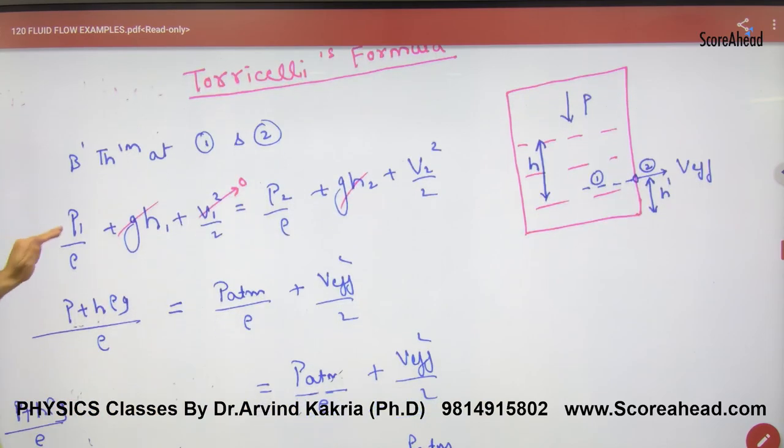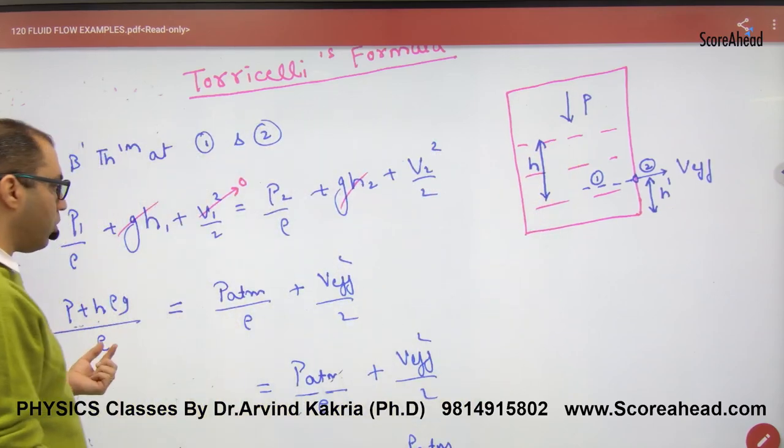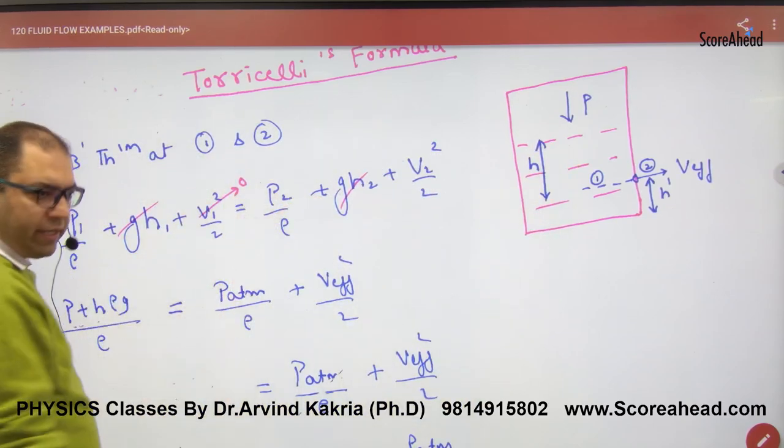In Bernoulli's equation, p1 - what will be the pressure here? p. The pressure is p plus h rho g divided by rho. The potential energy term is taken and it will cancel.